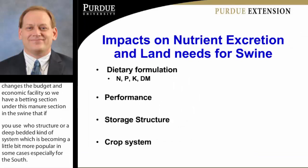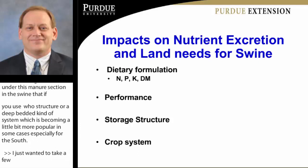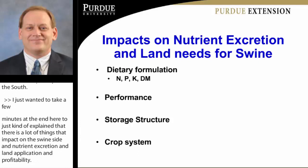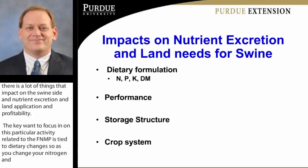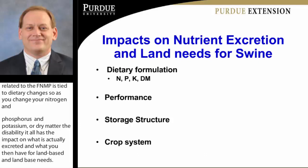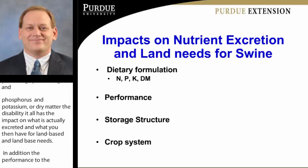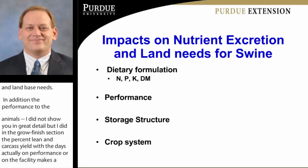A lot of things impact the swine side — nutrient excretion, land application, and profitability. The key ones related to the FNMP are tied to dietary changes. As you change your nitrogen, phosphorus, potassium, or dry matter digestibility, it all impacts what's actually excreted and what you have for land-based needs. In addition, animal performance — percent lean, carcass yield, and the days they're on the facility — makes a difference in how much nutrients are excreted. The storage structure determines nitrogen losses and evaporation from that facility, which determines what you have for land application tied into the cropping system.